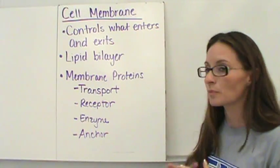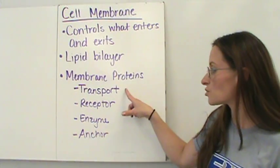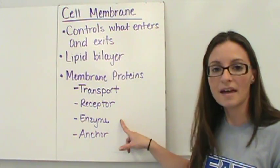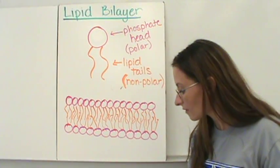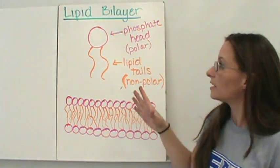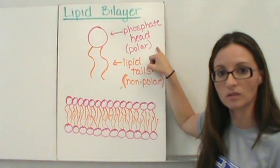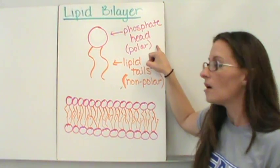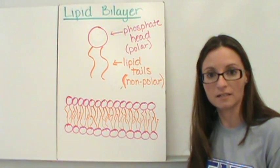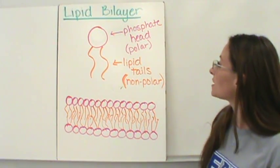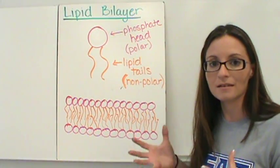We're also going to look at all four membrane proteins: transport proteins, receptor proteins, enzyme proteins, and anchor proteins. The lipid bilayer consists of two parts. It has what's called a phosphate head, and the phosphate is a polar molecule. Polar means that it likes water — it's called hydrophilic, meaning water-loving. The phosphate head is polar and water-loving, so it will mix with anything that is a polar molecule.